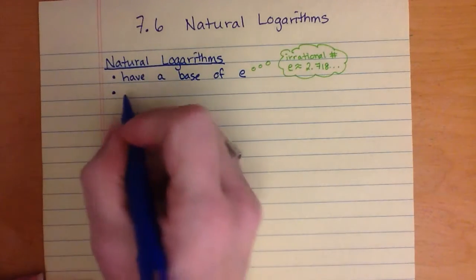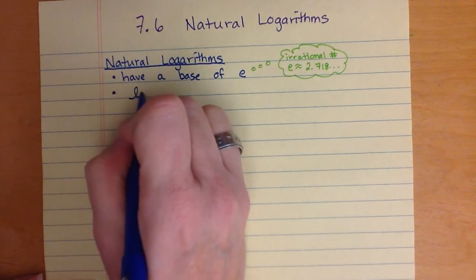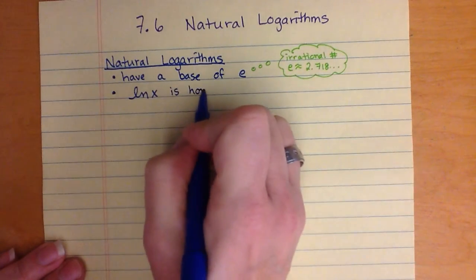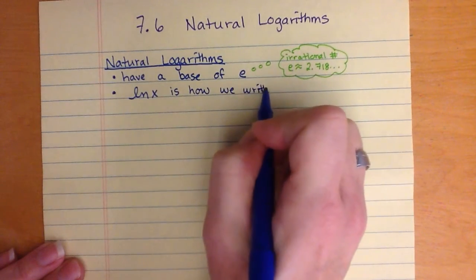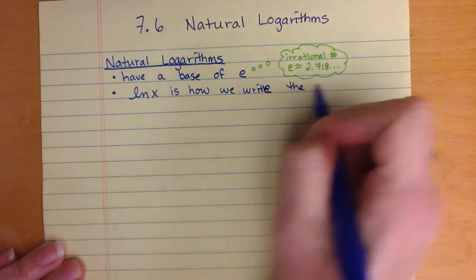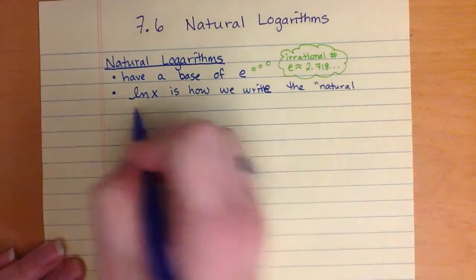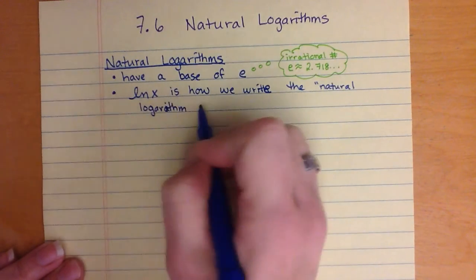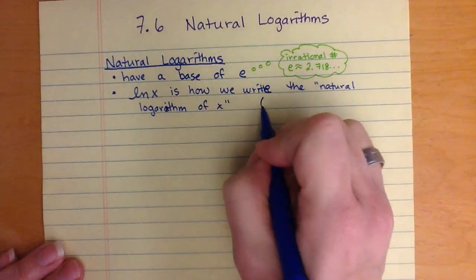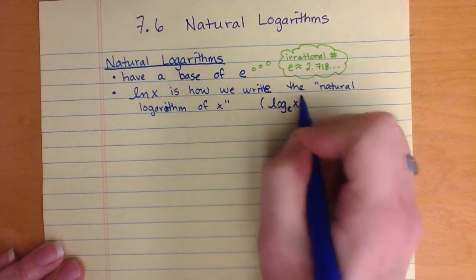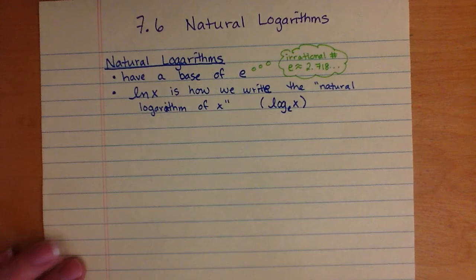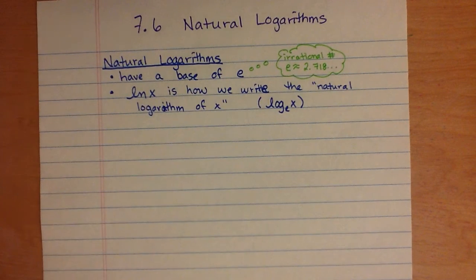The way that we write natural logarithms is to use the letters ln. So ln of x is how we write the natural logarithm of x. Sometimes you'll see it written as log base e of x, but we prefer ln of x. The reason that I write it with cursive letters is so it doesn't look like a 1n if you just use regular plain letters.